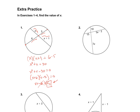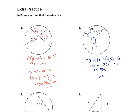Moving on to number 2 — same situation, two chords intersecting inside a circle. It's this piece times this piece equals 15 times (5x − 2). So 10 times 7x equals 15 times (5x − 2), giving 70x = 75x − 30. Subtracting 70x and adding 30 to each side: 30 = 5x, so x = 6. You can verify: 6 × 7 = 42 times 10 is 420, and on the other side 6 × 5 − 2 = 28 times 15 gives the same result.